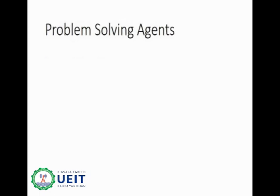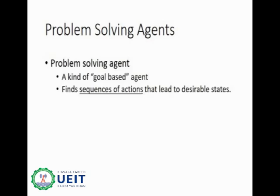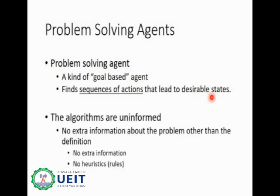Goal-based agents, discussed in lecture 7, are further divided into two types: problem-solving agents and planning agents. For this lecture, we will keep our discussion focused on problem-solving agents. Problem-solving agents consider each state of the world as indivisible, meaning the state is atomic — you cannot divide it further. The algorithms that problem-solving agents use are uninformed, which means no extra information about the problem is provided, no heuristics are given, and no path costs have been provided.